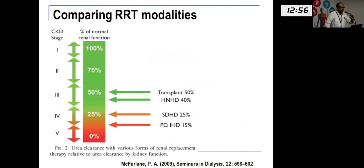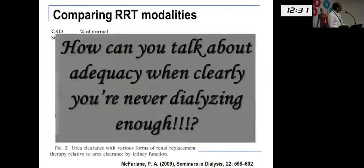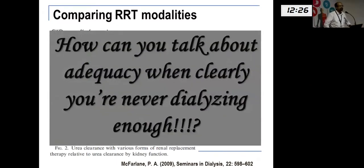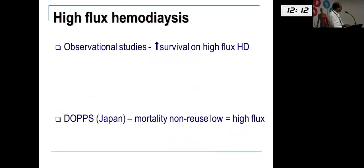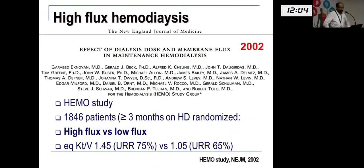Comparing RRT modalities, transplant is probably the best form of renal replacement therapy. Nocturnal home hemodialysis comes next in terms of providing renal function, with short daily and peritoneal dialysis lower. The concept raises the question of adequacy — we're designed with 100% renal function but giving only 50% at best. Observational studies showed increased survival on high-flux, but the DOPS observational cohort from Japan showed that mortality was the same for low or high flux, leading to debate and the landmark HEMO study.